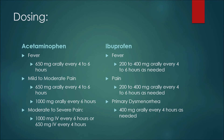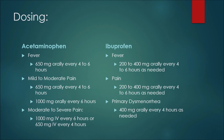For some dosing examples with ibuprofen or Advil: for fever, we may see 200mg to 400mg orally every 4-6 hours as needed. For pain, the dosing would be the same — 200mg to 400mg orally every 4-6 hours as needed. For primary dysmenorrhea, we may see 400mg orally every 4 hours as needed, keeping in mind that there would be a maximum daily dose in play.